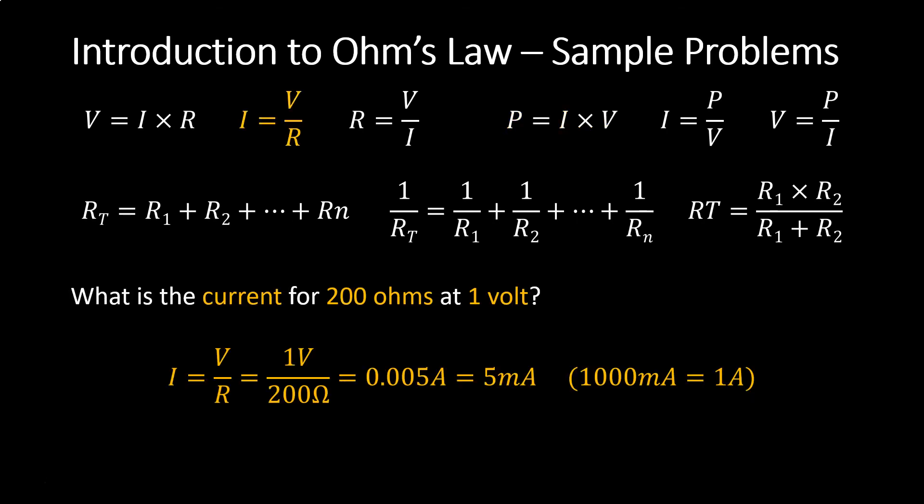What is the current for 200 ohms at 1 volt? You're given 200 ohms and 1 volt, and you're solving for current. Current equals voltage divided by resistance, so 1 volt divided by 200 ohms equals 0.005 amps. That can also be expressed as 5 milliamps, since 1,000 milliamps equals 1 amp — you're essentially moving the decimal point three places to the right to convert from amps to milliamps.